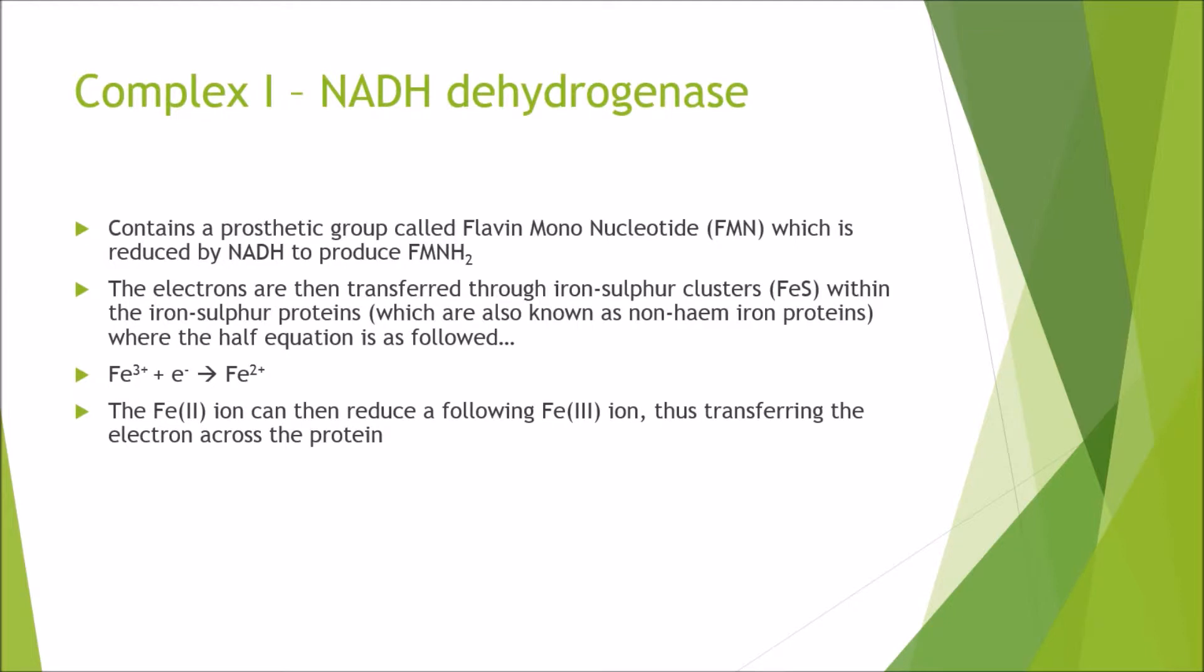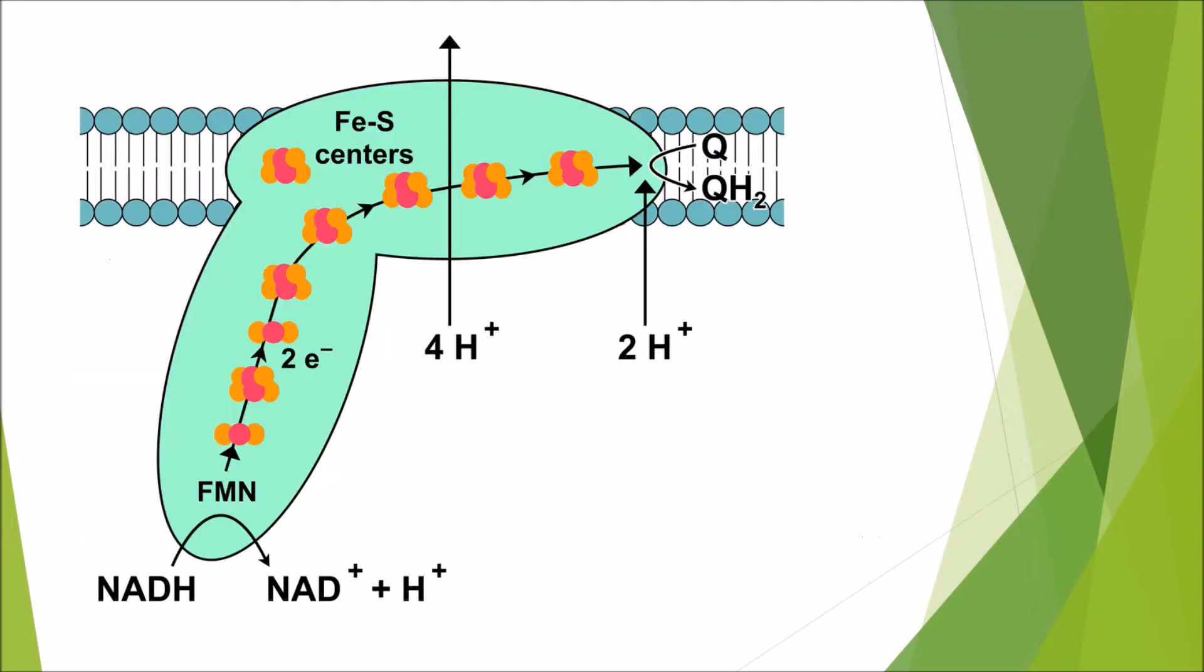The Fe2+ ion can then reduce a following Fe3+ ion, thus transferring the electron across the protein. The electrons are then finally passed on to another protein called ubiquinone. But during the process, 4 hydrogen ions are pumped into the intermitochondrial space. So as we see in the bottom, we've got NADH reducing the FMN. The electrons then go past down these iron-sulfur clusters until it reaches ubiquinone here, and in doing so, 4 hydrogen ions are pumped into the intermitochondrial space.